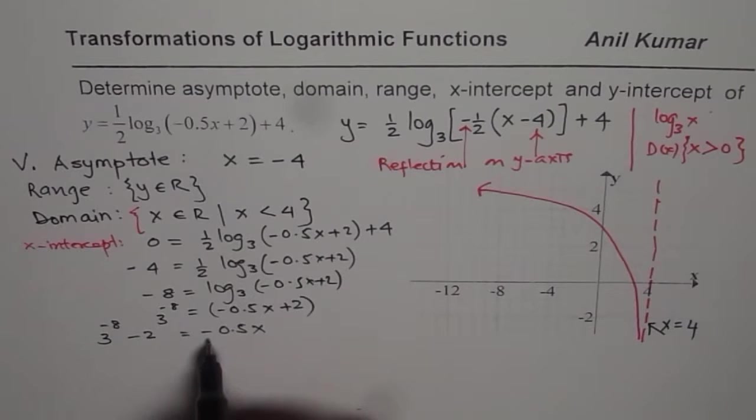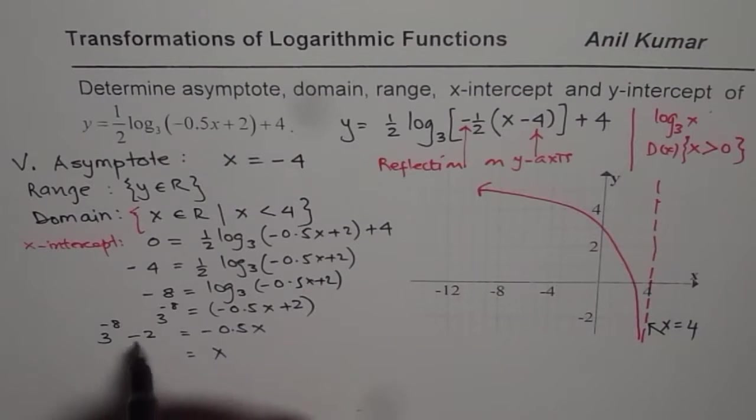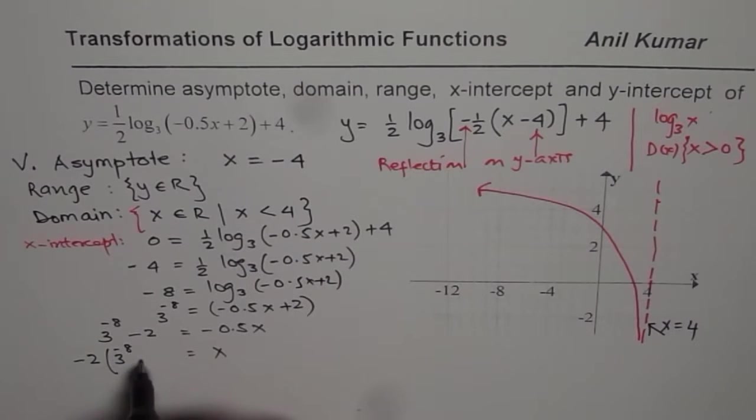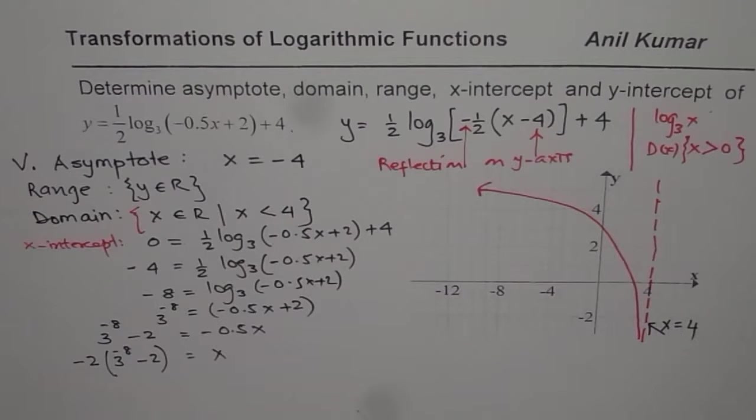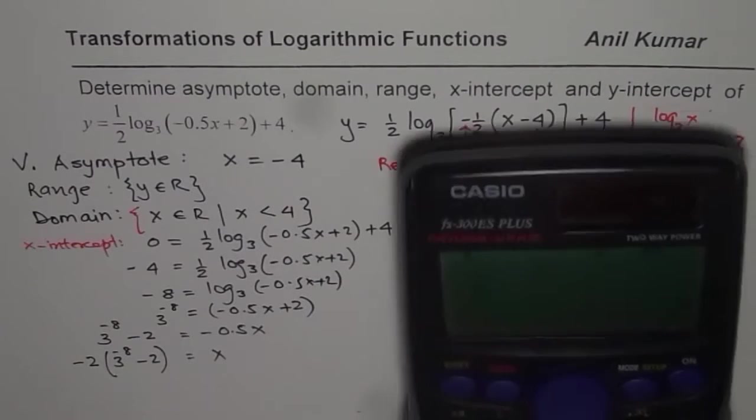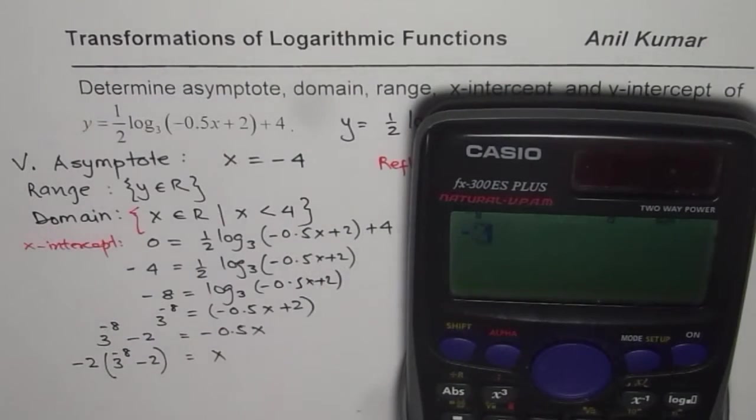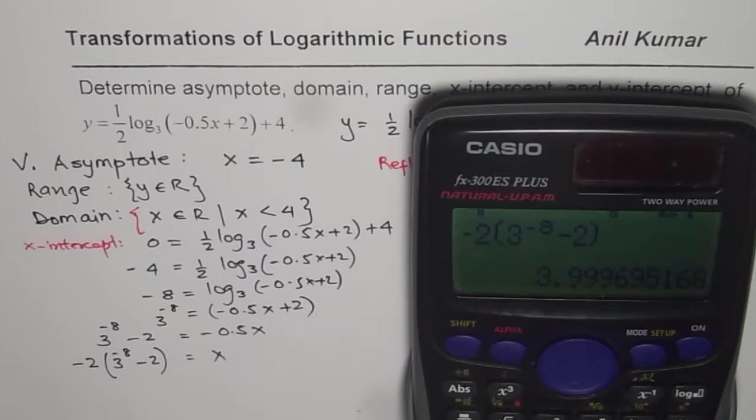0.5x is half with a negative sign. The value of x is equal to... you have to multiply by 2. So it is minus 2 times 3 to the power of minus 8, minus 2. That is what you get as the x value. We can use the calculator to solve it. We have minus 2 within brackets, 3 to the power of minus 8, and then minus 2, bracket close, equal to, so we get 3.999.